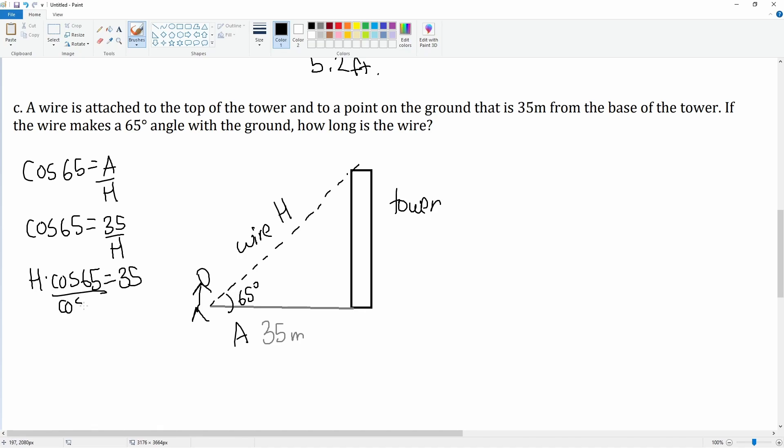We divide both sides by cosine 65. This cancels, cosine 65 divided by cosine 65 is 1, so h is equal to 35 over cosine 65, which is approximately if you plug that into the calculator, 35 divided by cosine 65, that gets you approximately 82.81 meters long. So that is the length of the wire.